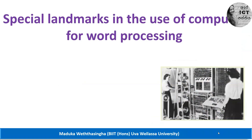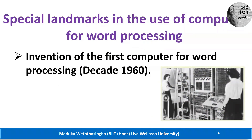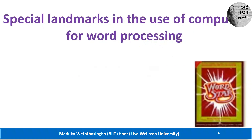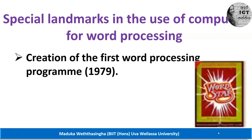There are two special landmarks in using computers for word processing. The first landmark is the invention of the first computer software for word processing, invented in 1960, used to make word documents. The second landmark is the creation of the first word processing software, called WordStar, which was the name of the very first word processing software.